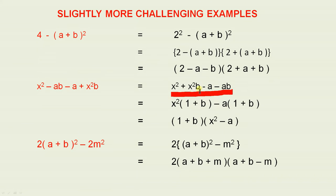You can see why. If we look at the first two terms, we take x² outside of the brackets, and I'm left with 1 plus b. That's very obvious.